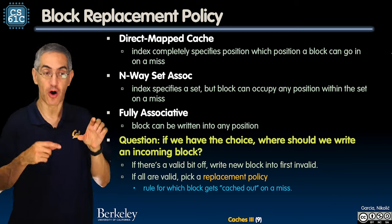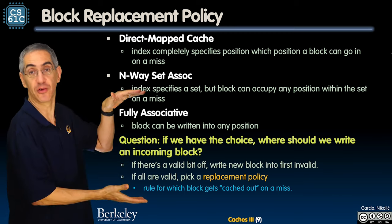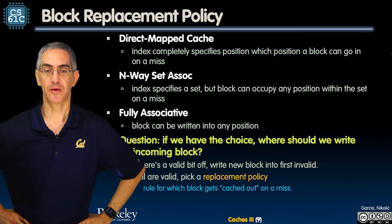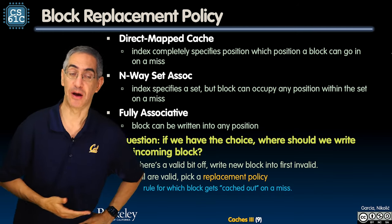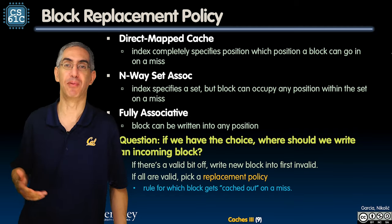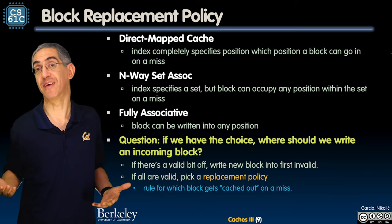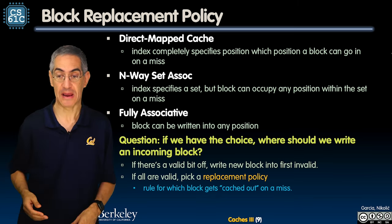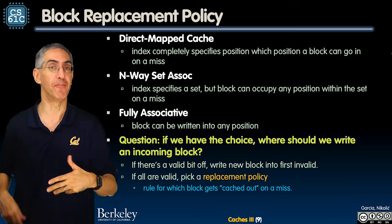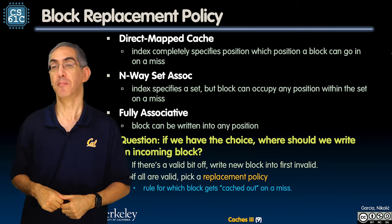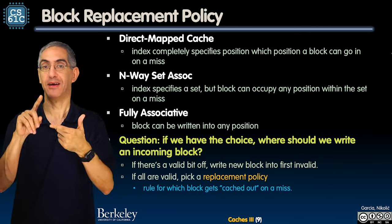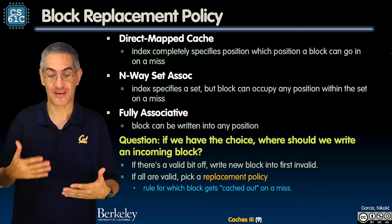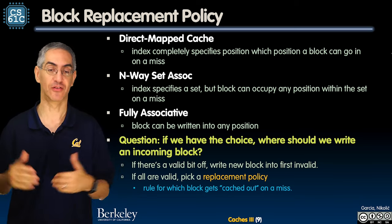Both n-way set associative and fully associative are fully associative within either the set or the whole cache, respectively. So if I have a choice of where to write the incoming block, first let's find a blank spot — check the valid bits, see if there are any invalid blocks. If there's an empty spot, put it there. Don't have to kick anybody out. But what happens when they're all full, all valid, none of the tags match, and we've got to bring somebody else in? Somebody's got to go.